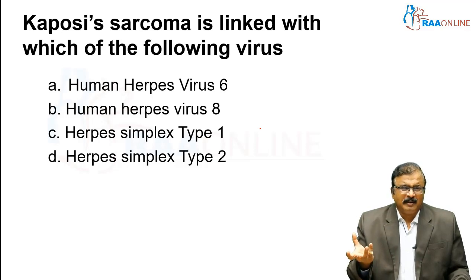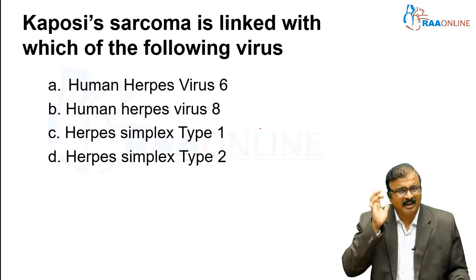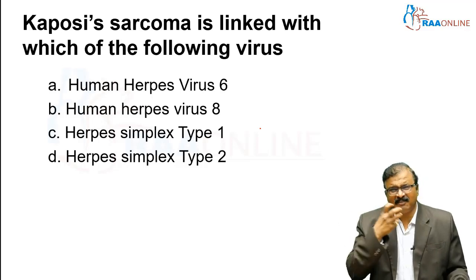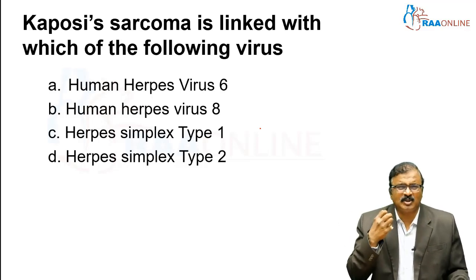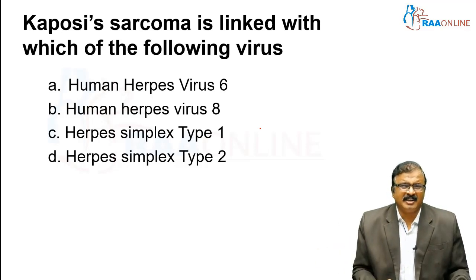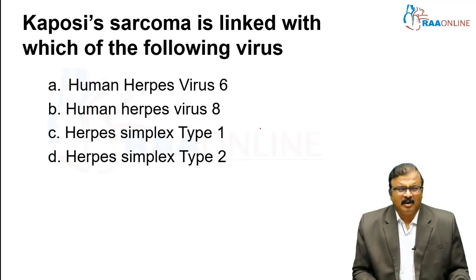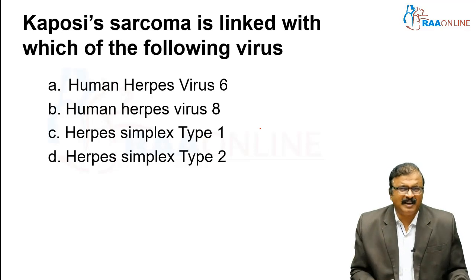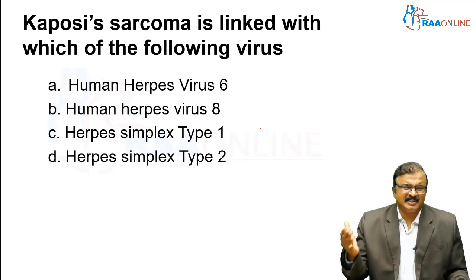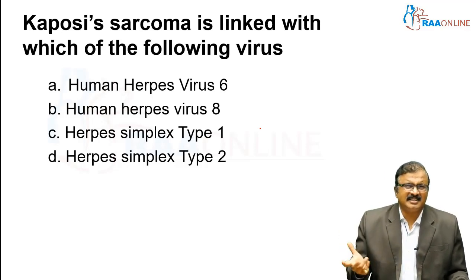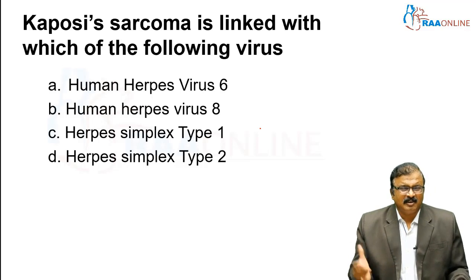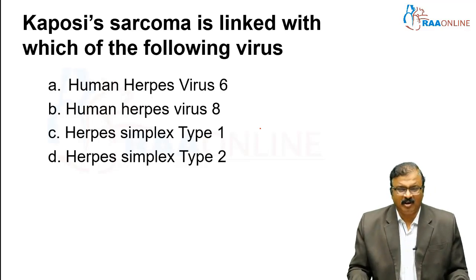Kaposi sarcoma is an AIDS-defining illness. It can occur in various areas, starting from the buccal mucosa, and can affect internal organs — the gut — everywhere it can be seen. Herpes Simplex type 1 and type 2 are totally different; type 2 presents with genital lesions, and both type 1 and type 2 can cause CNS involvement.